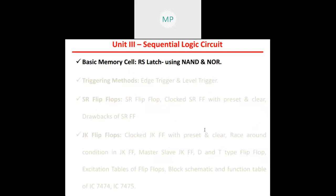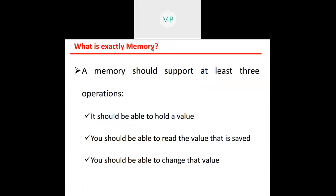Now let's look at the basic memory cell. A memory should support at least three operations: first, it should be able to hold a value — that is, store a binary bit; second, you should be able to read the value that is saved; and third, you should be able to change that value.